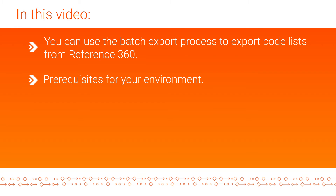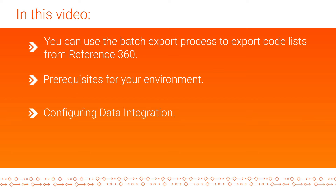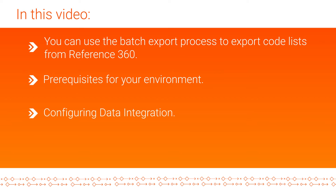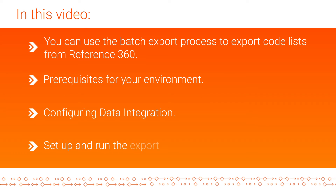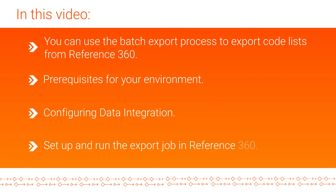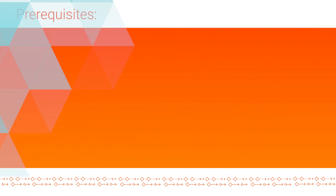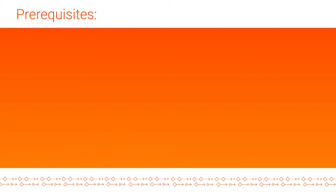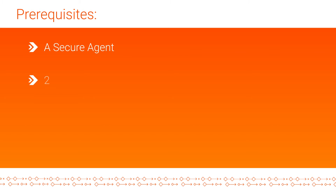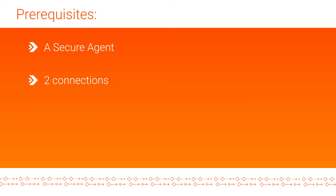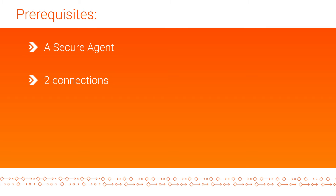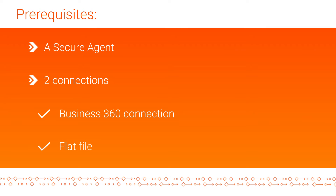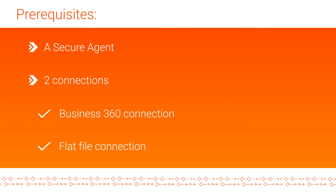After that we'll move on to configuring data integration, and finally we'll go over how to set up and run the export job in Reference360. Let's begin. First, let's cover the prerequisites needed to run a batch export job. You'll need a secure agent and two connections to run the job. For this demo we have a Business360 and a flat file connection already configured.